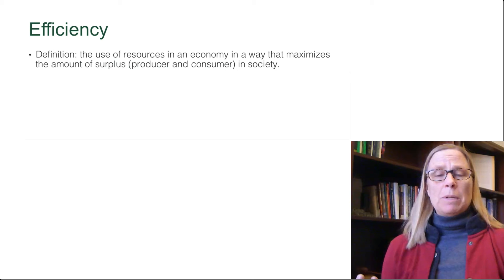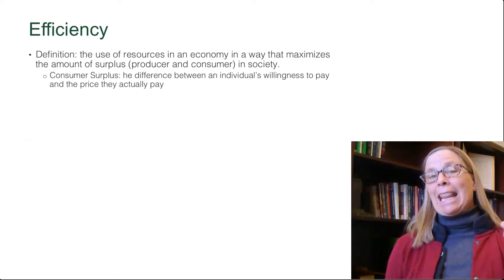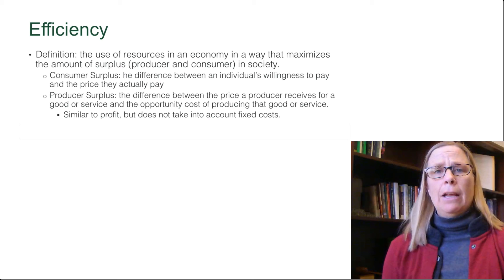What we've been talking about so far is consumer and producer surplus. Consumer surplus is the difference between a consumer's willingness to pay for an item and the price they actually pay — it's the gain that they get from making a trade. Producer surplus is the difference between the price that they receive for an item and the opportunity cost to them of producing or providing that item. It's similar to profit, but not the exact same thing, because it's really the difference between price and marginal cost, whereas profit takes into account fixed costs.